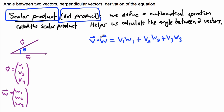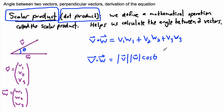So that's half of the definition — and the other half says this: V dot W also equals the magnitude of V times the magnitude of W times the cosine of theta. Keep in mind, this is the whole thing. So theta is the angle between the two vectors — in this case, V and W.